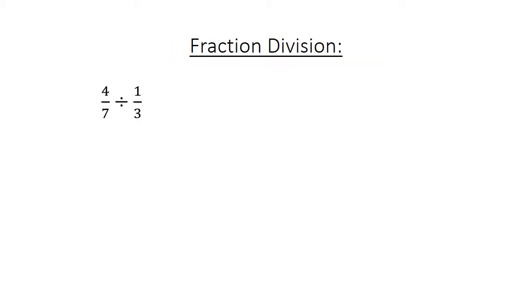Fraction division: 4 over 7 divided by 1 over 3 equals 4 over 7 times 3 over 1 equals 12 over 7 equals 1 and 5 over 7.